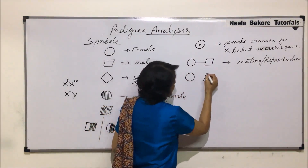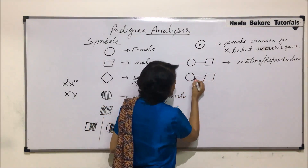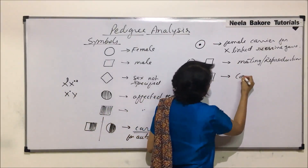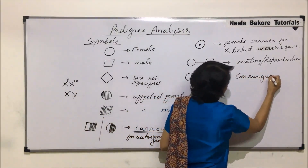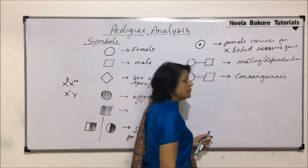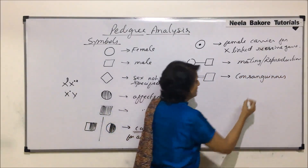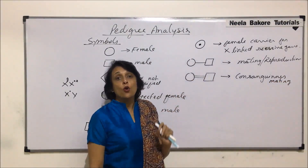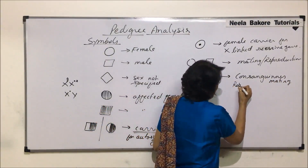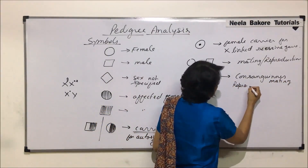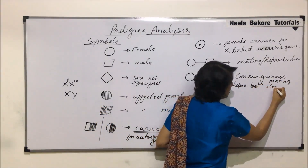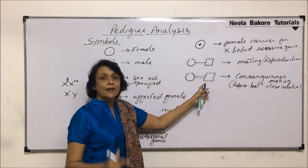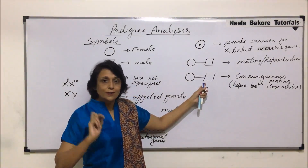Sometimes the male and female are connected by two horizontal lines instead of one. This represents consanguineous mating — that is, reproduction or marriage between close relatives.